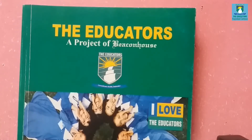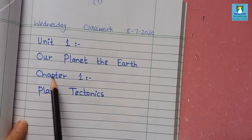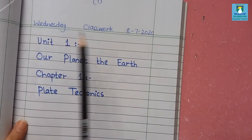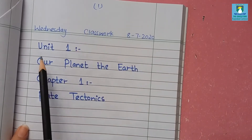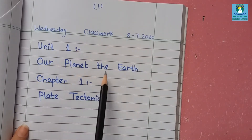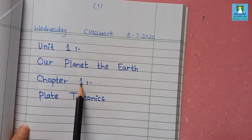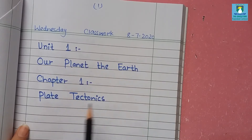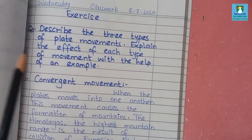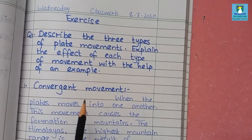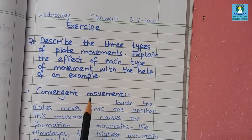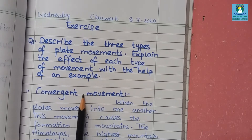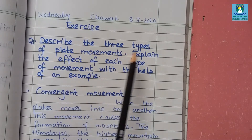Kindly open your notebooks, write down the day and classwork, and mention the date and page number. Unit one is 'Our Planet the Earth.' Chapter one, which we have studied, is about plate tectonics. In this exercise we have only two questions. The first question is a long question: describe the three types of plate movements.